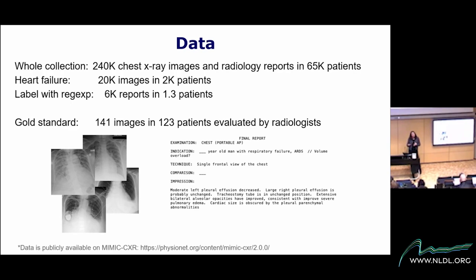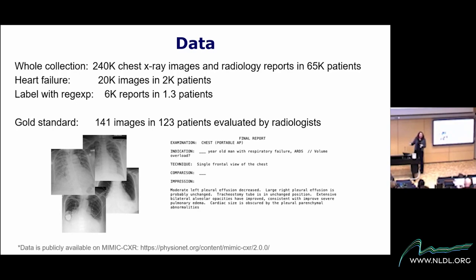Every patient has more than one image because when patients are admitted, chest X-rays are taken every 12 to 24 hours to assess their health state. We wrote scripts — really keyword-based tools with negation checking — where our clinical collaborators identified keywords important to each stage, and we labeled some images that way. These labels are incredibly noisy, and we could only label about 6,000 out of 20,000 images.